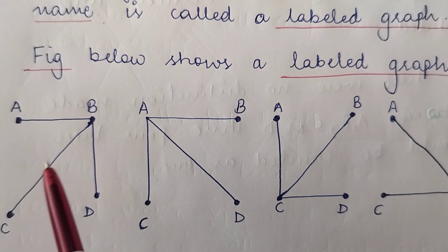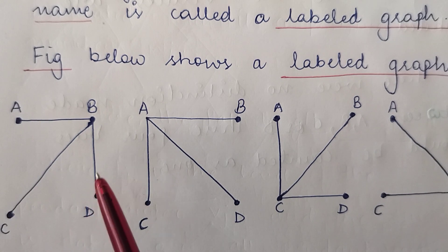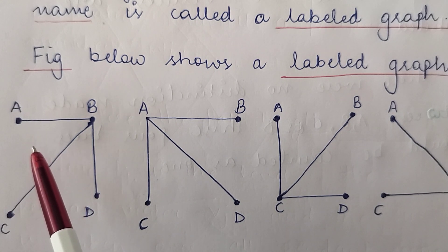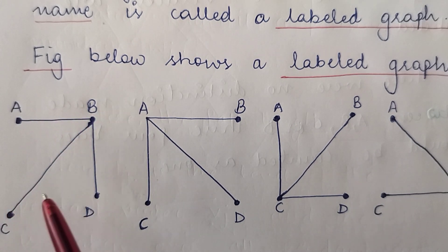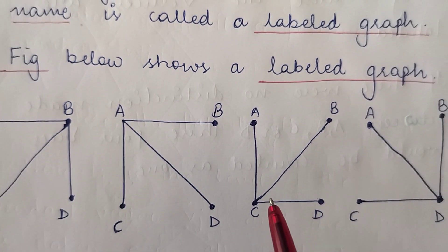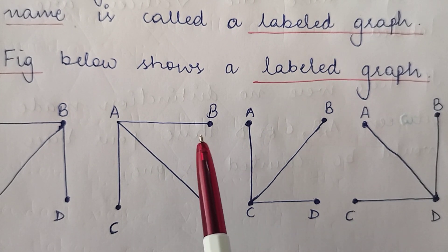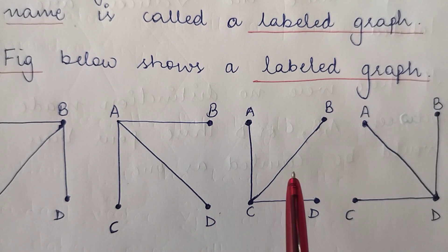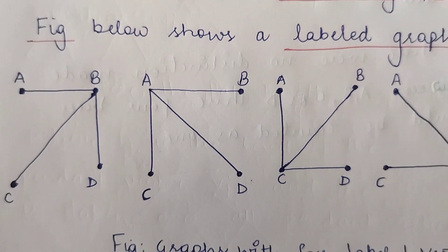For example, here you can see a graph with four vertices and all the four vertices are labeled as A, B, C, D. So you can call it a labeled graph. Similarly, the remaining three graphs that you can see here are also having labeled vertices, so they are labeled graphs.